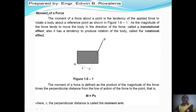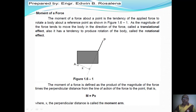The moment of a force about a point is the tendency of the force to rotate the body about a reference point. For example, if we have a force P applied to a plate, the tendency is that the plate will rotate about point A. That is the moment effect — the force produces a moment about A, causing the body to rotate about point A. Moment is a rotational effect.